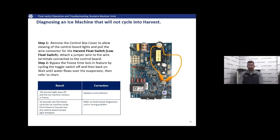For cool air, it's a little different because the floats plug in differently. We go straight to the board — remove the control box cover, unplug the float switch from the board, attach a jumper to the terminals on the board, and bypass the lock-in by turning the toggle switch to off and then back to ice. Wait until water is going over the evaporator, then check the same way. If the harvest light stays off and the machine stays in freeze 10 seconds after the pump kicks on, the board cannot see the signal — get a replacement board. But if the machine does go into harvest, you have a problem with the harness or the float itself. Ohm out the float — if that passes, the issue is the wiring harness. If the float doesn't pass, the issue is the float.